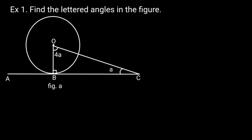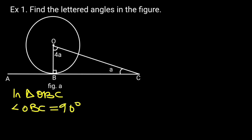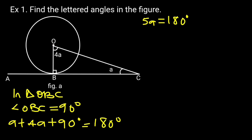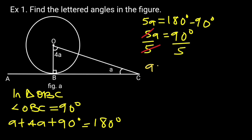Example 1: Find the lettered angles in the figure. In triangle OBC, angle OBC is equal to 90 degrees. Reason: angle at the point where the tangent touches the radius is 90 degrees. So A plus 4A plus 90 degrees equals 180 degrees. Reason: sum of angles in a triangle. Collecting like terms: 5A equals 180 minus 90, so 5A equals 90 degrees. Dividing by 5, A equals 18 degrees.